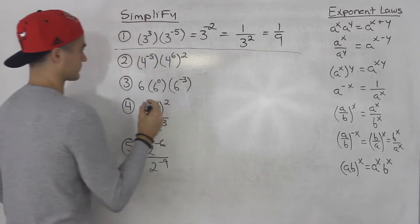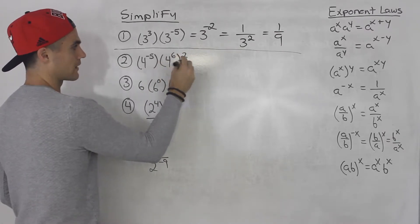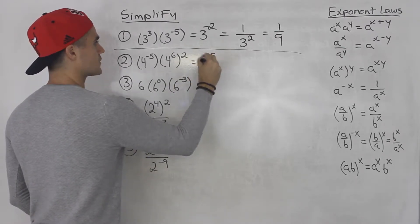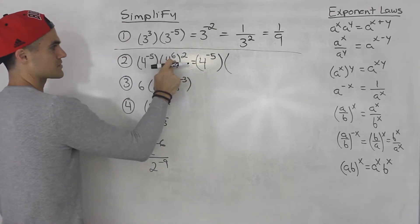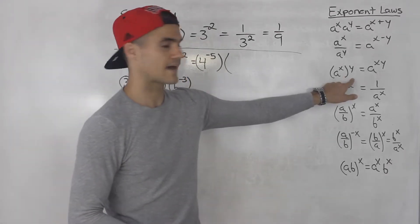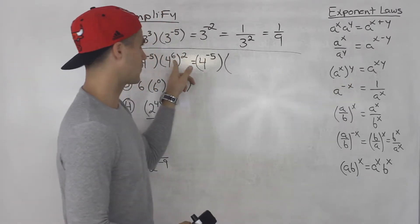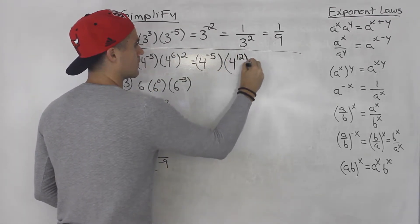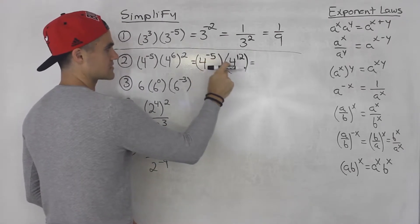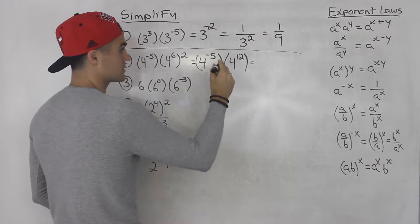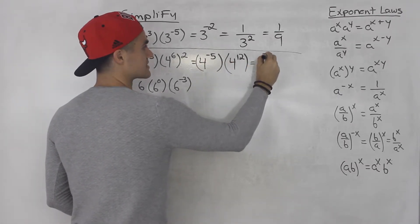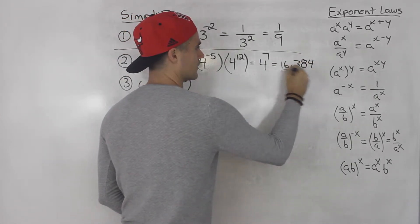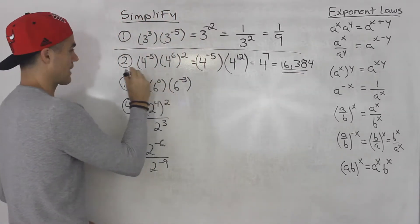Number two: we got four to the negative five times four to the power of six squared. We have the same base, but first we want to simplify four to the power of six to the power of two. Notice that's this scenario here — when it's in this format you multiply the exponents, so this ends up being four to the twelve. Then four to the negative five times four to the twelve — multiplying the same base, add the exponents — gives us four to the seven. And four to the seventh power is sixteen thousand three hundred and eighty four.